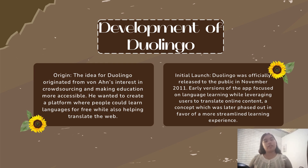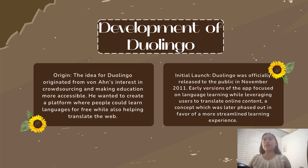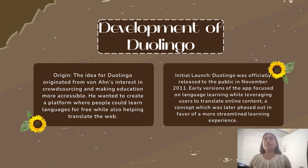The idea for Duolingo originated from Von Ahn's interest in crowdsourcing and making education more accessible. He wanted to create a platform where people could learn languages for free while also helping translate the web. Duolingo was officially released to the public in November 2011. Early versions of the app focused on language learning while leveraging users to translate online content, a concept which was later phased out in favor of a more streamlined learning experience.